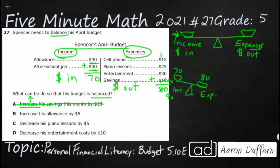Option B: increase his allowance by $5. Well, that's probably set by his parents and not his choice. But if we were to do that, it'd be $45, getting income up to $75. Even coming back to the original $80 in expenses, $75 still wouldn't be enough — it'd be closer, but not balanced. So increasing his allowance is not going to work either.